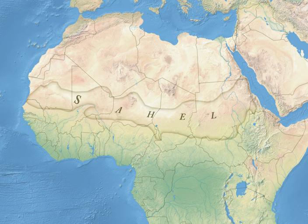The Sahel is the ecoclimatic and biogeographic zone of transition in Africa between the Sahara to the north and the Sudanian savannah to the south. Having a semi-arid climate, it stretches across the south-central latitudes of northern Africa between the Atlantic Ocean and the Red Sea.